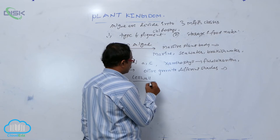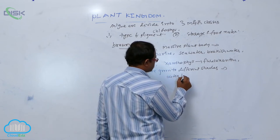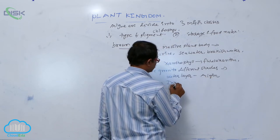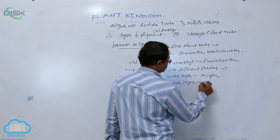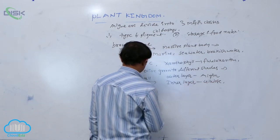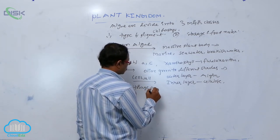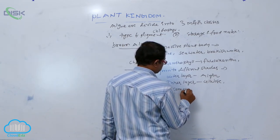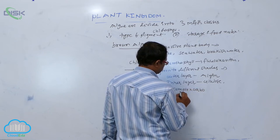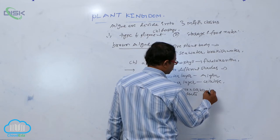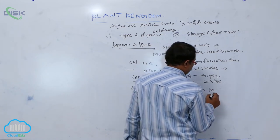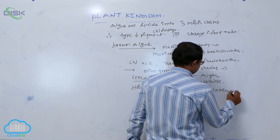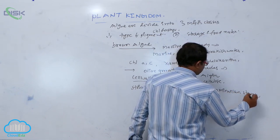The cell wall is made up of two layers. The outer layer is known as algin, and the inner layer is known as cellulose. The storage food material is a complex carbohydrate known as laminarian starch, and mannitol.